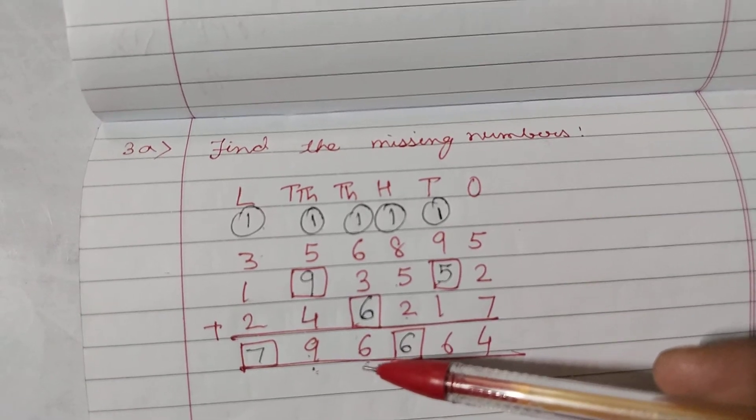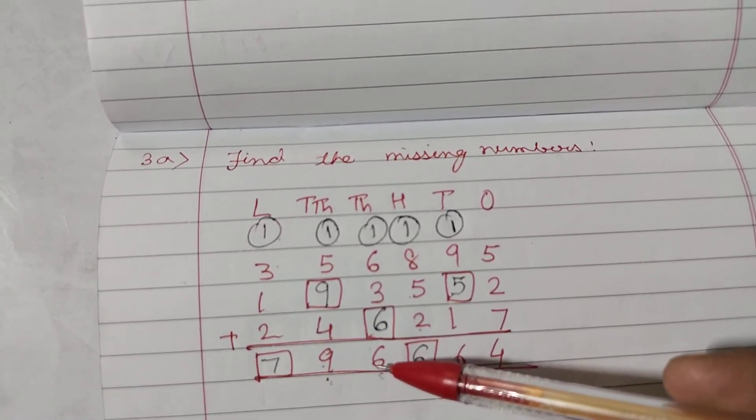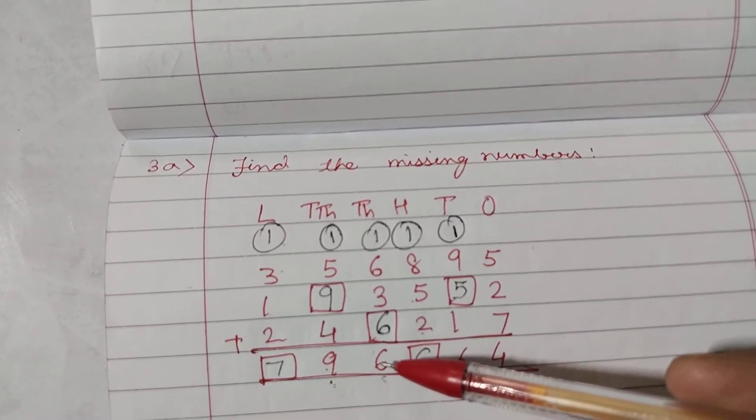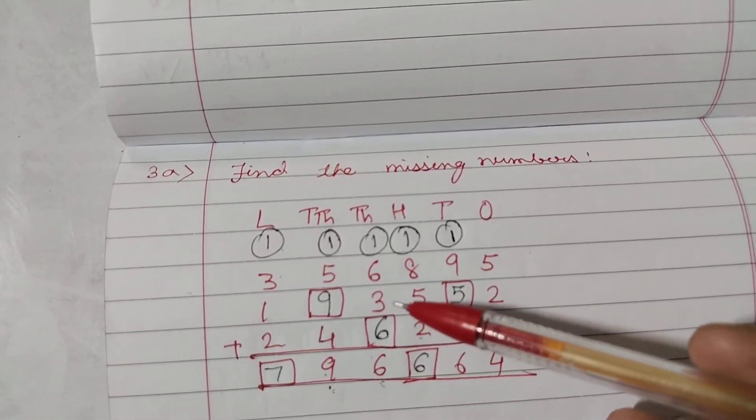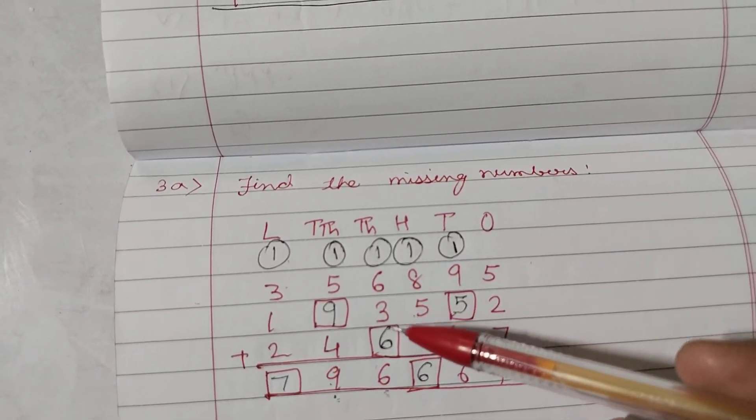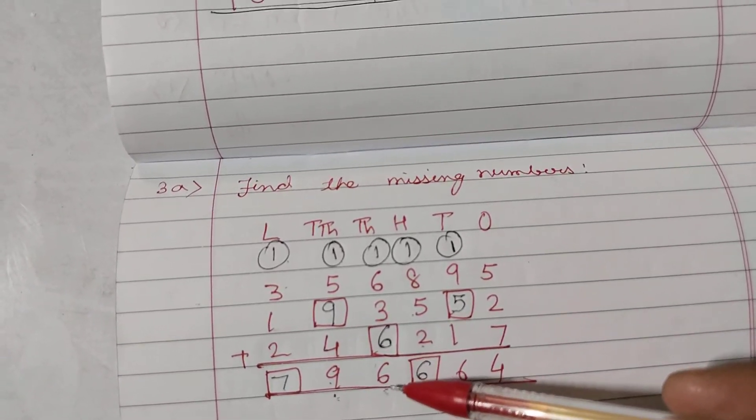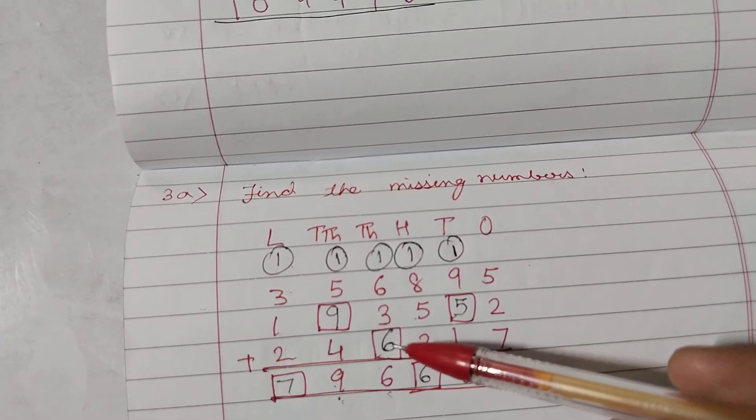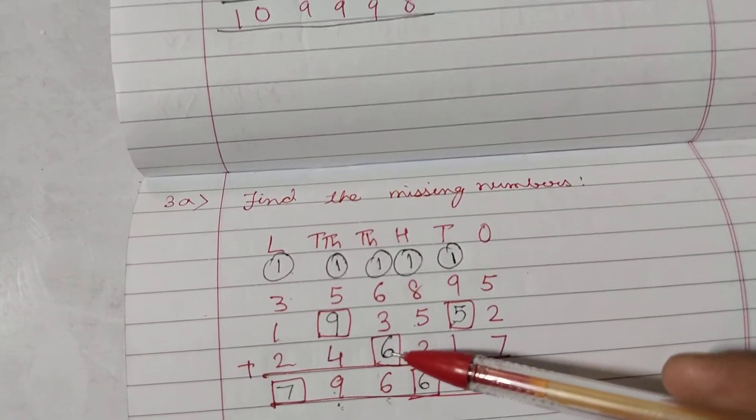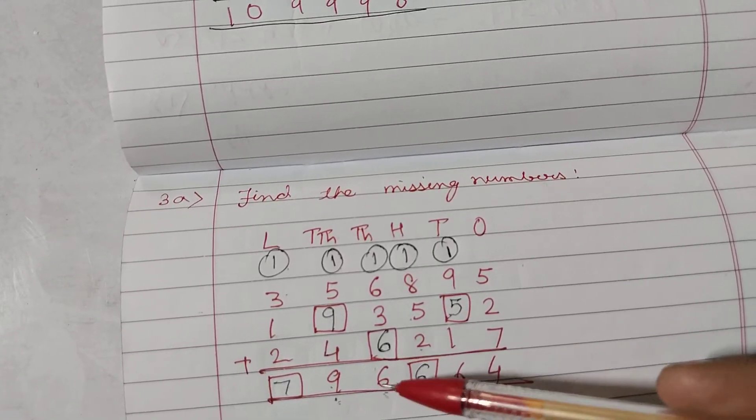Again, children, we are doing addition. So, obviously, the result will be more. Isn't it? So, what shall we add in 10 to get, not the 6, to get 16? So, 10 plus 6, 16. So, write here 6.